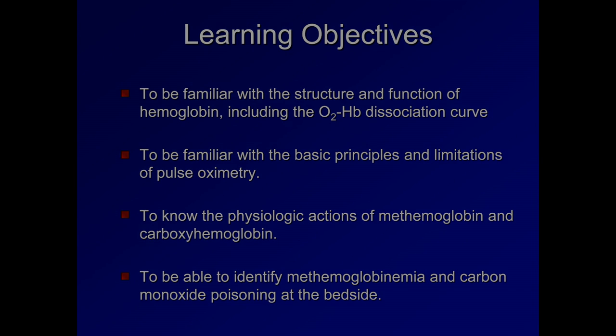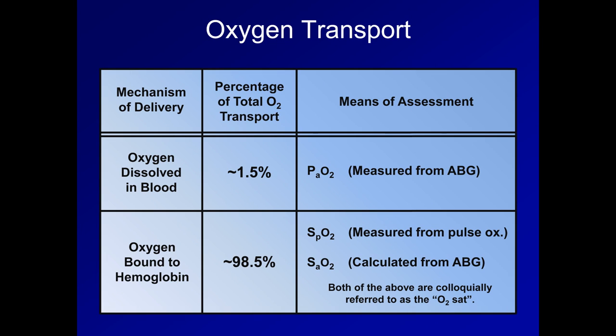As I reviewed in lecture 16, there are two mechanisms by which oxygen is transported in arterial blood. A tiny fraction is directly dissolved in blood, which we can assess by measuring the partial pressure of oxygen with an ABG. The overwhelming majority of oxygen is transported bound to hemoglobin. This oxygen can be assessed by SpO2, which is measured from a pulse oximeter, or from SaO2, which is usually calculated from an ABG. Both SpO2 and SaO2 are colloquially referred to as the O2SAT, although neither is accurate in all situations.